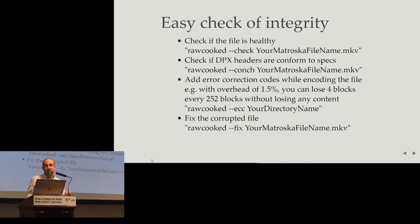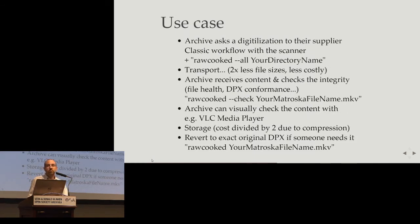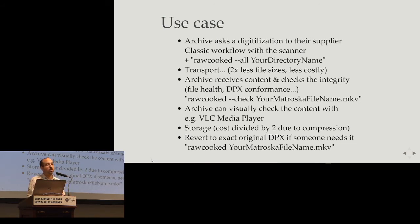It is all with very easy commands: RAWcooked --check, RAWcooked --conch for conformance checker, or RAWcooked --fix for fixing the file. Let's take a use case: an archive wants to receive a scan from a different supplier. The classic workflow is that your supplier does the scan and sends you the DPX — a lot of files — but you don't know if the DPX is correct or not. With RAWcooked, you do RAWcooked --all, which means conformance check, add error correction code, and check that all is fine, in one command.